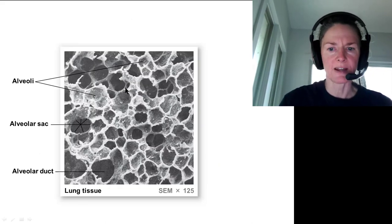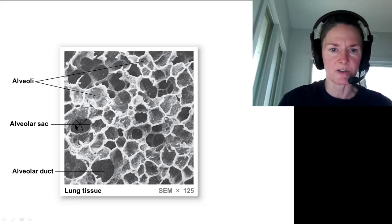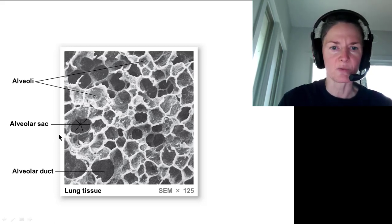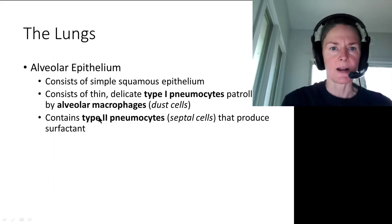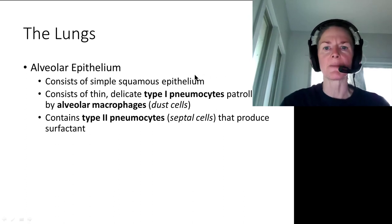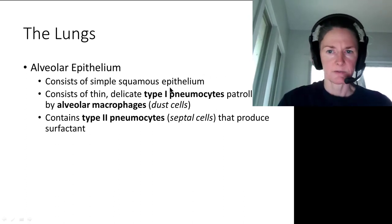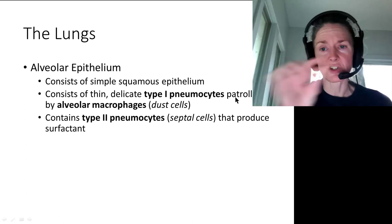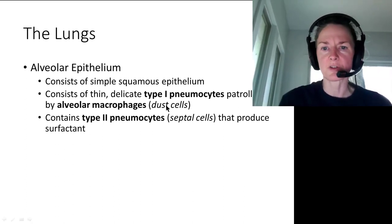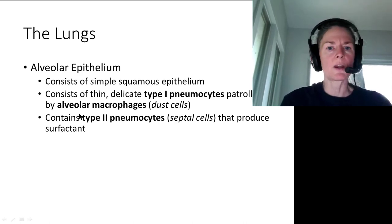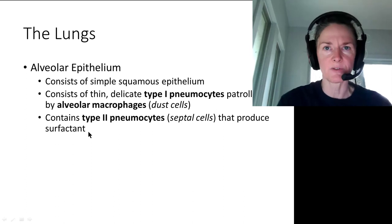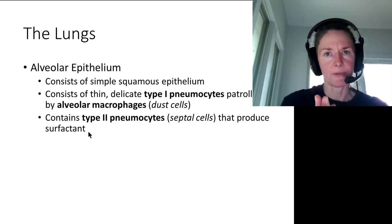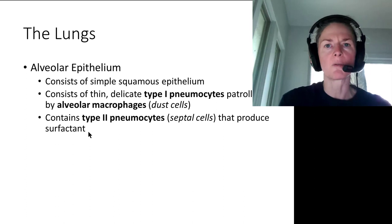In a scanning electron micrograph, we can see individual alveoli with an alveolar sac and alveolar duct ending in the sac surrounded by all the little alveoli. Simple squamous epithelium lines the inside of each alveolus. Type 1 pneumocytes are the actual exchange surfaces. Alveolar macrophages (phagocytic dust cells) patrol inside. Type 2 pneumocytes produce surfactant, which prevents collapse of the alveoli by keeping alveolar walls from sticking together.